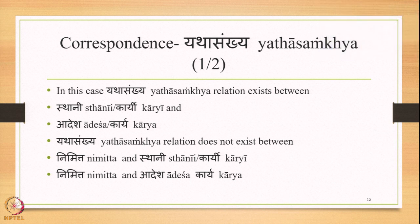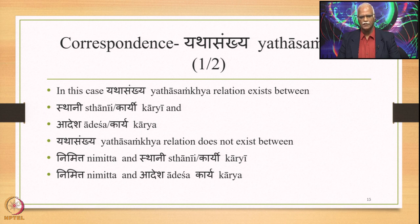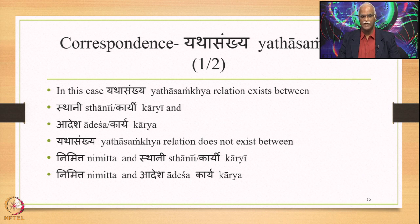Since we have Shchuhu as Sthani or Kargi and Shchuhu as Adesha or Karia and also as Nimitta, the natural question is about the correspondence between them. The answer given by the tradition is that Yathasankha relation exists between Sthani and Adesha — Kargi and Karia only. Yathasankha does not exist between Nimitta and Sthani, or Nimitta and Kargi, or Nimitta and Adesha. It exists only between Sthani or Kargi and Adesha or Karia.